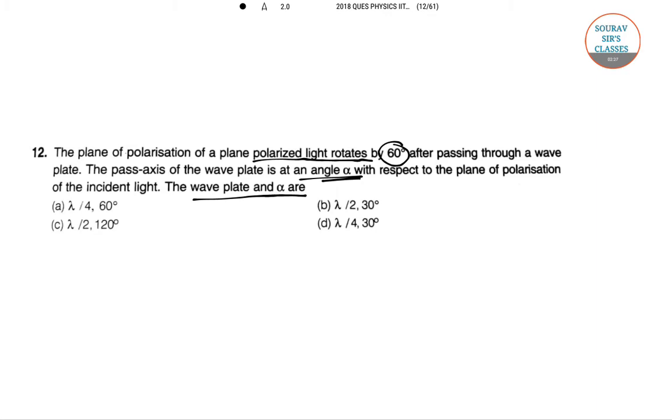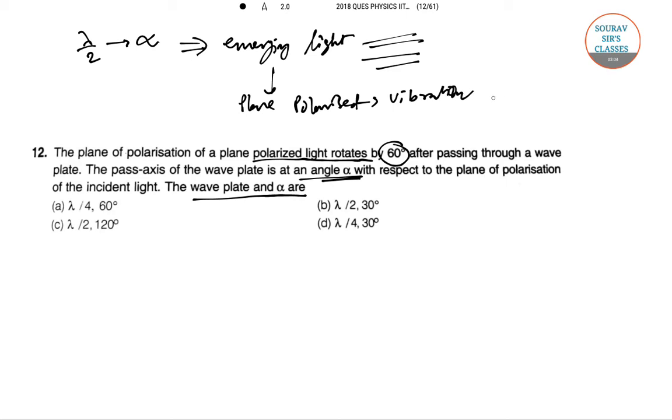So ek plate agar polarized hota hai, agar half wavelength bhi lete hai, lambda by 2, so uske sath se angle agar hota hai alpha with the direction of the optical axis. So emerging light is also plane polarized with vibration. So yeh bhi plane polarized hi aayega. Aur iska vibration hoga 2 alpha.